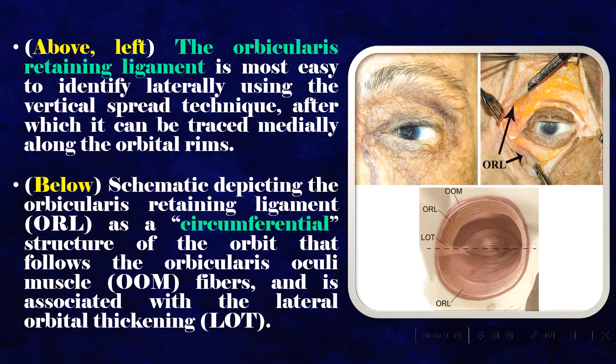The orbicularis retaining ligament is most easy to identify laterally using the vertical spread technique, after which it can be traced medially along the orbital rims.